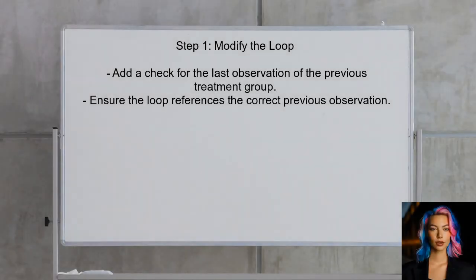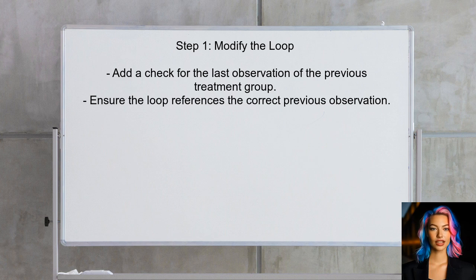To address the user's issue, we will first modify the existing loop to incorporate a check for the last observation of the previous treatment group. This will ensure that when a new treatment appears, we can correctly reference the last valid observation from the previous group.